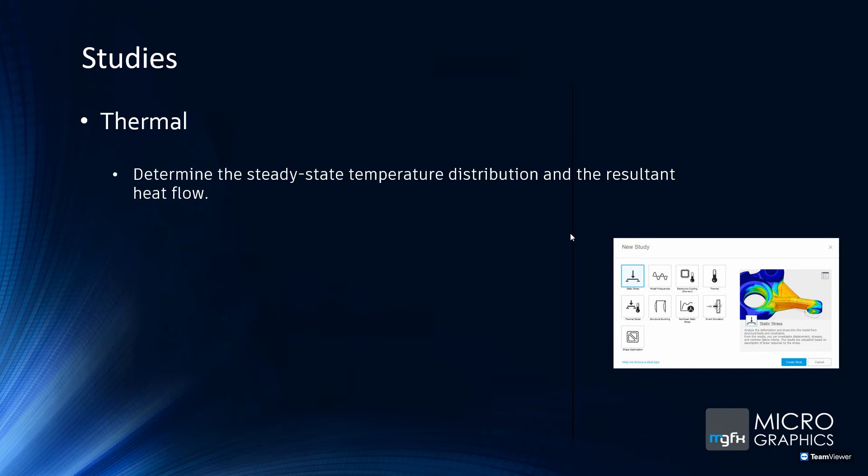Then you've got thermal properties, which relate to temperature — what is hot or cold, what's exuding heat, what's drawing heat in. For example, in a computer, the cooler it is, the better it runs. If it overheats, you get that Windows blue screen. Thermal studies tell you what temperatures exist in an enclosed environment and whether you're running over the optimal operating temperature.